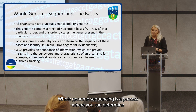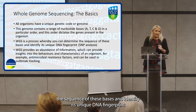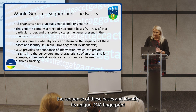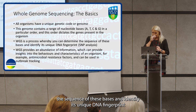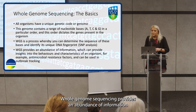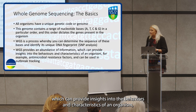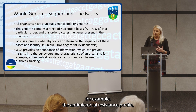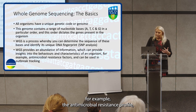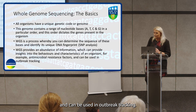Whole genome sequencing is a process where you can determine the sequence of these bases and identify its unique DNA fingerprint, and you can use techniques like SNP analysis. Whole genome sequencing provides an abundance of information which can provide insights into the behaviours and characteristics of an organism, for example the antimicrobial resistance profile, and can be used in outbreak tracking.